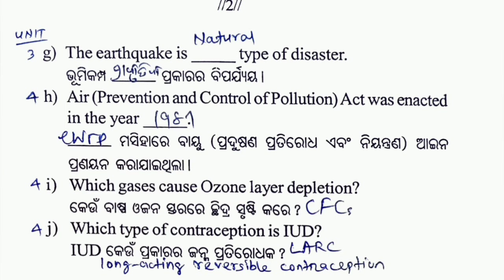Which gases cause ozone layer depletion? What type of contraception is IUD? IUD stands for long-acting reversible contraception. This is the first set of Part 1 questions.